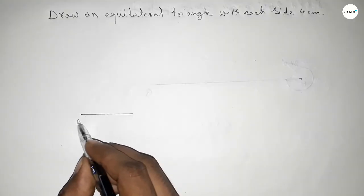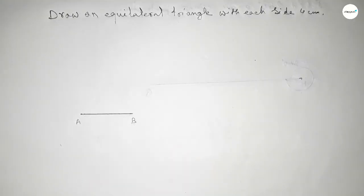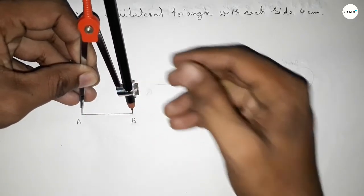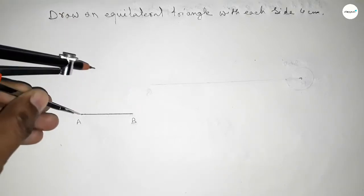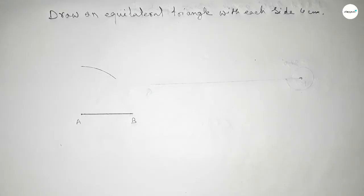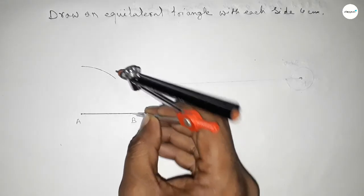This is point A and point B, so AB equals 4 centimeters. Now putting the compass on line AB and taking the length. Drawing an arc here. With the same length, putting the compass at the other point.